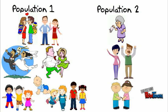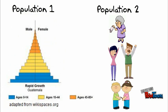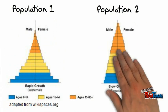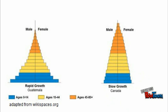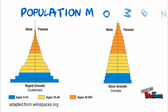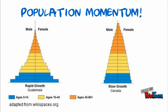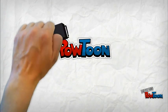Even if two populations are the same size and people in both populations have the same number of children, the population with a young age structure will grow more because so many of its members are pre-reproductive. As these pre-reproductive children reach adulthood and start having their own children, the population grows by population momentum.